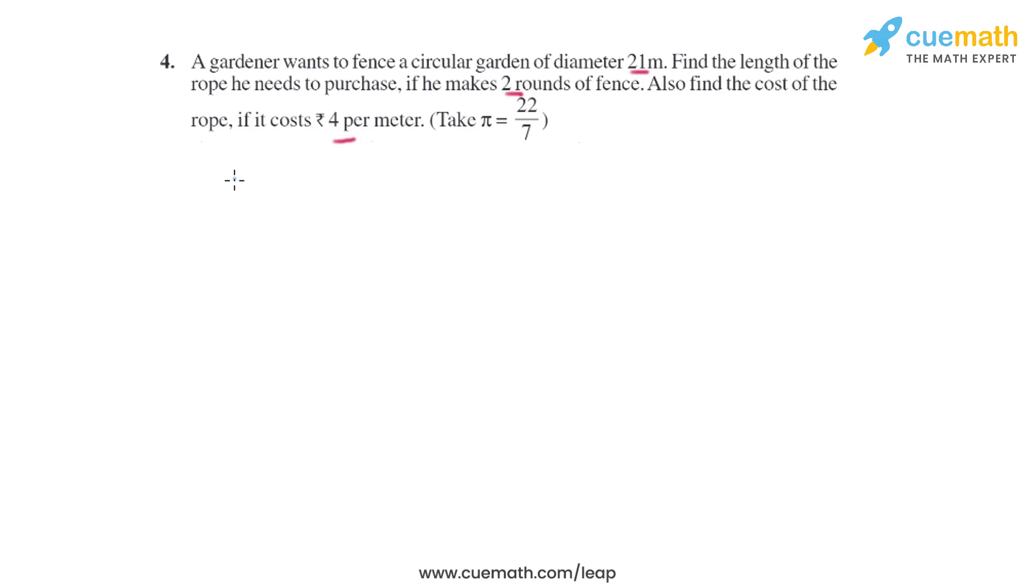The formula to find the circumference of the circle is 2πR. Now let's use this formula to find the circumference of the circle. It is given in the question that we need to take π as 22/7.